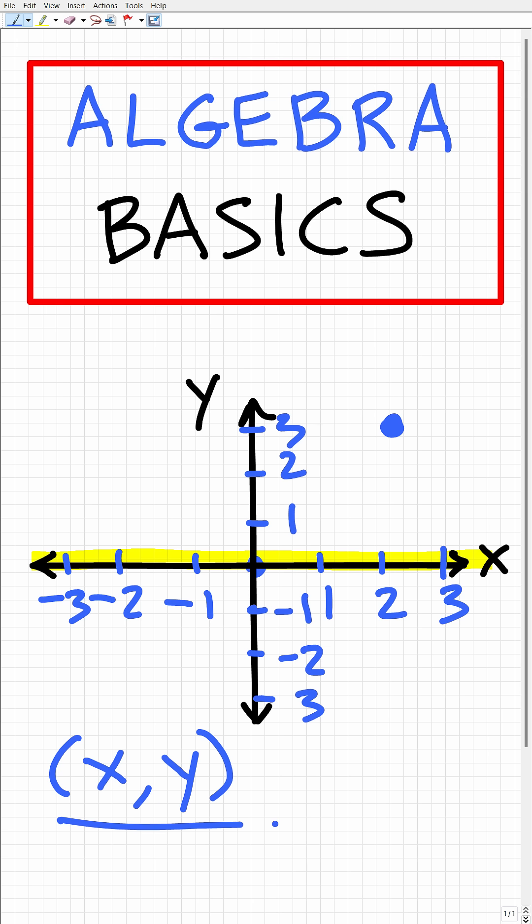This would be what we call an (x,y) point or an ordered pair that represents the location of a coordinate on the x-y plane. You can see here we have x and then y. This is an ordered pair.